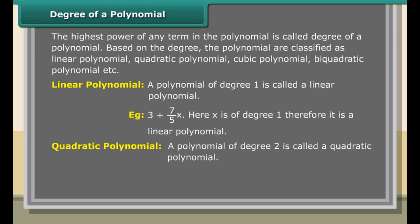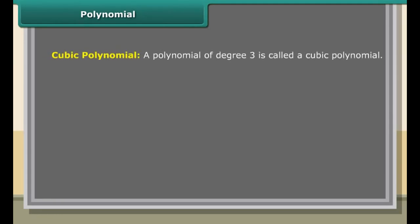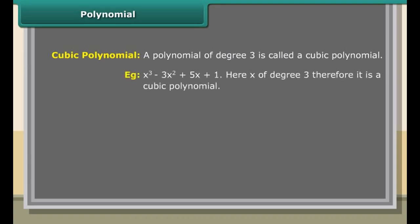A polynomial of degree 2 is called a quadratic polynomial. For example, X² minus 4X plus 4 — here X is of degree 2, therefore it is a quadratic polynomial. A polynomial of degree 3 is called a cubic polynomial. For example, X³ minus 3X² plus 5X plus 1 — here X is of degree 3, therefore it is a cubic polynomial.